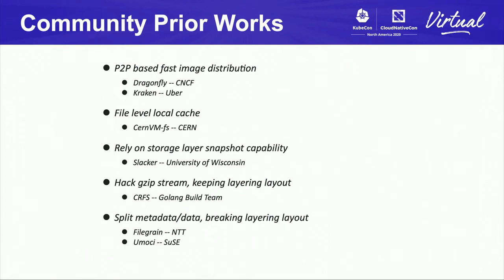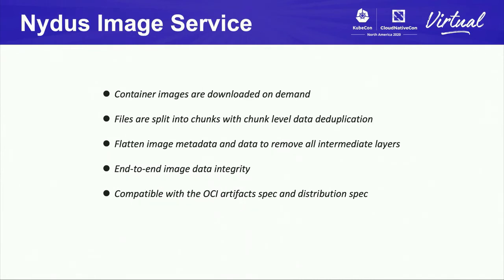Observing this, we designed and implemented the NIDAS image service to improve the current state. With careful design, NIDAS image service has these key features: container image data is downloaded on-demand; files are split into chunks and NIDAS supports chunk-level data deduplication; image metadata and data are flattened so no intermediate layers are maintained; it supports end-to-end data integrity checks; and it is compatible with the OCI artifact spec and distribution spec, allowing easy integration with existing image distribution deployments.